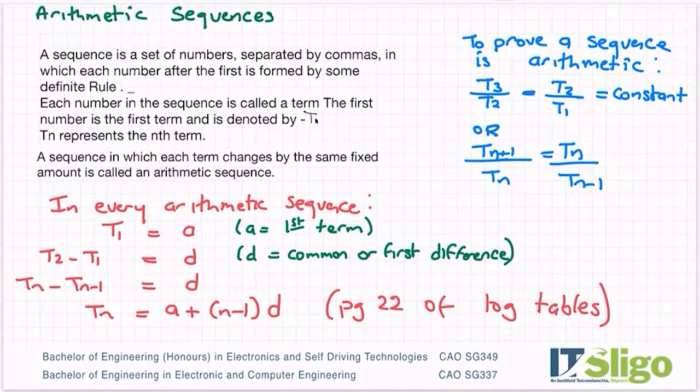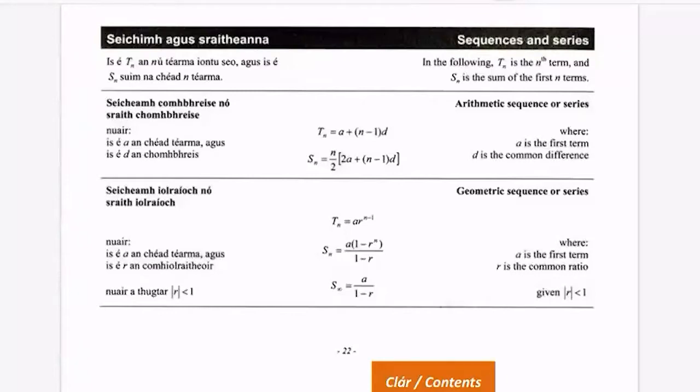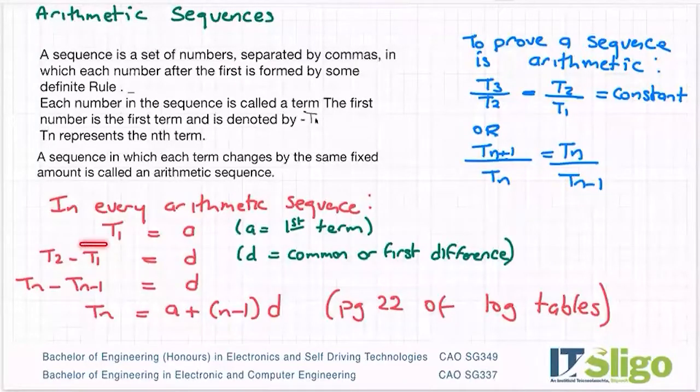So some important stuff you need to know about every arithmetic sequence. T1, and some of this is in the data sheets or in the log tables, page 22. You can see arithmetic sequences up here. So a is the first term. D is the common difference. T1, your first term in your sequence is a.